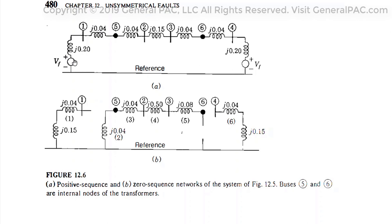In this figure, this is an example of a sequence network diagram. This is the positive sequence network and this is the zero sequence network. You can tell it's a positive sequence network because it has a voltage source. It appears to be a two-source network, with a source impedance on each side, and buses 1, 2, 3, and 4. This is probably a transmission line because it has the same impedance for positive and zero sequence current. This right here is your transformer impedances, and this right here is your transmission line or distribution line impedance.